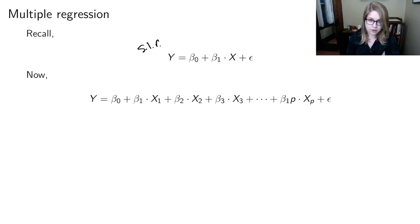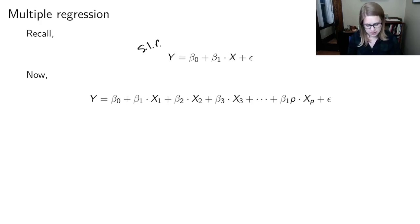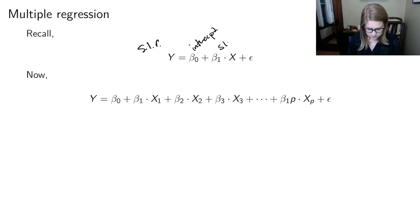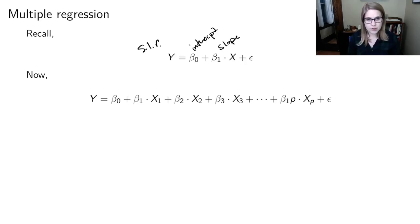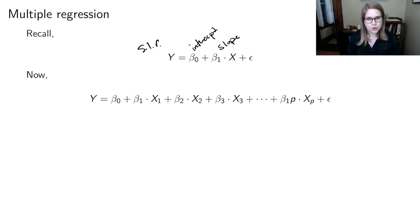Remember that in simple linear regression, we have beta zero, that's our intercept, and beta one, that's the slope. But we're not limited to a function of just one variable. We could have a function of many variables, and we're just going to make a linear combination with slope terms for each one.